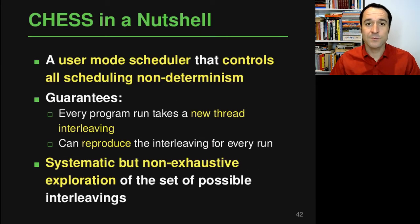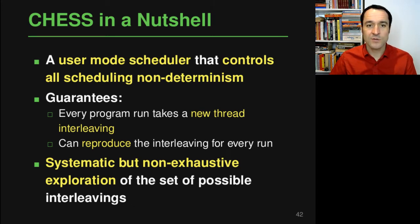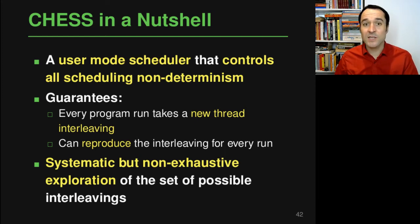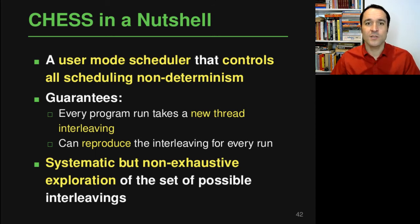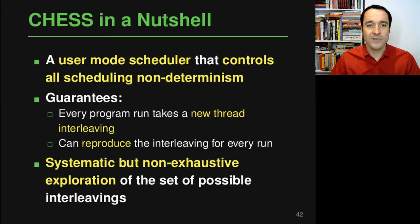One way to explore interleavings systematically is an approach called CHESS. CHESS is a user mode scheduler that controls all scheduling non-determinism of a program. You essentially give CHESS a program that has multiple threads and it controls in which order the different statements and operations of the concurrent threads are executed. CHESS makes two very interesting guarantees.